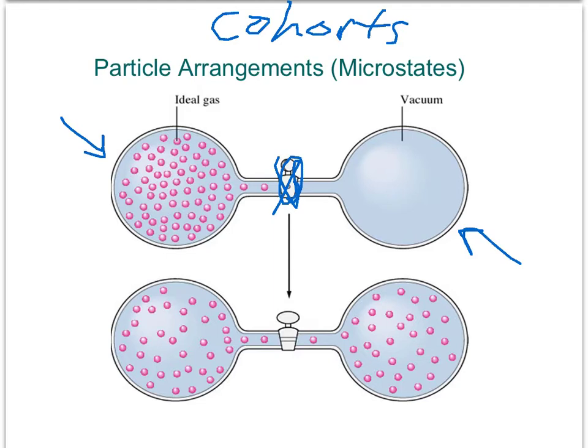The cartoon of this two-bulb system consists of a left and a right cohort containing a number of particles — probably about 50 — represented by those pink circles. This system of 50-ish particles actually has a couple of drawbacks. First, it's not really enough particles to represent anything close to an actual real system of a collection of gas particles.